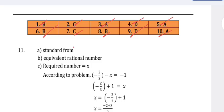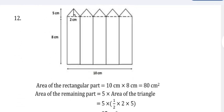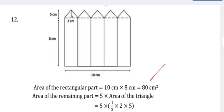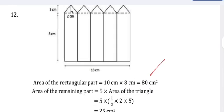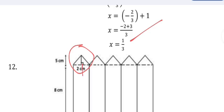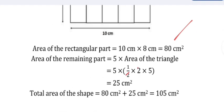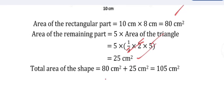Question 11 answer: standard form. Question 12 answer: equivalent rational numbers. Question 13: The required number equals x. According to the problem, x = 1 by 3. For the craft area: area of the rectangular part plus area of the triangles — area of each triangle = half × base × height = half × 2 × 5. There are 5 such triangles, so total triangle area = 5 × 5 = 25 centimeter square. Total area = 80 + 25 = 105 centimeter square.